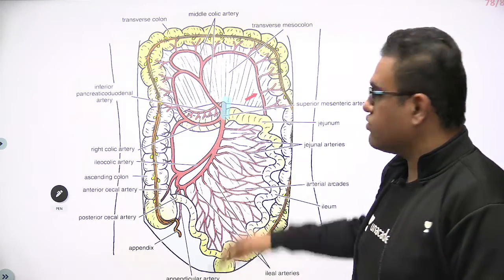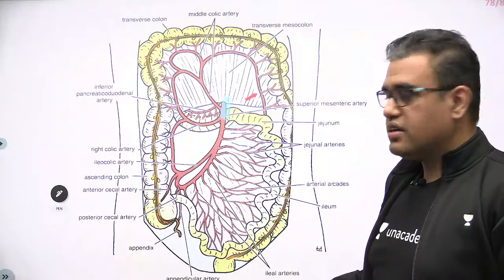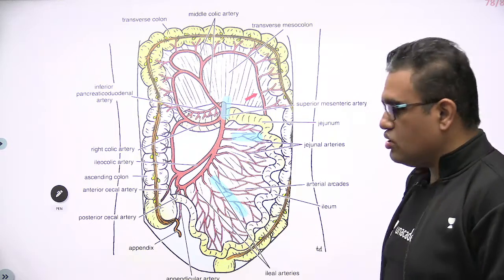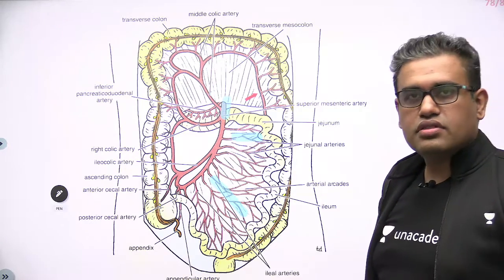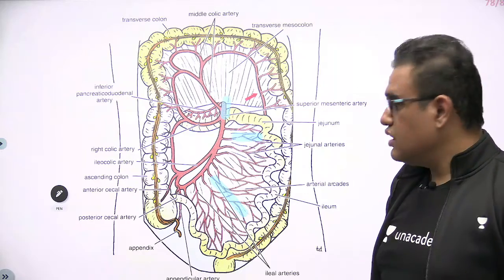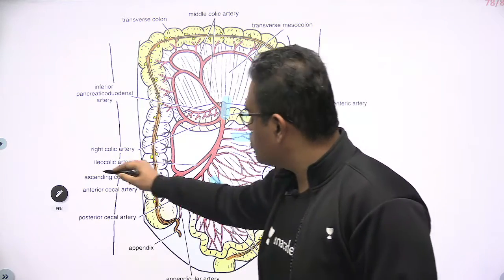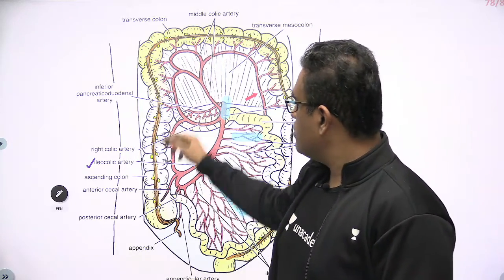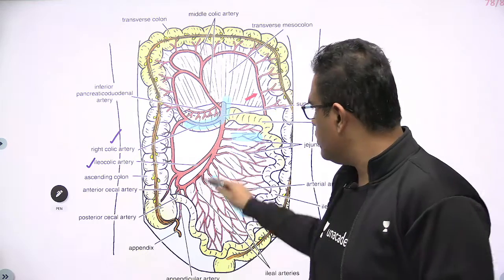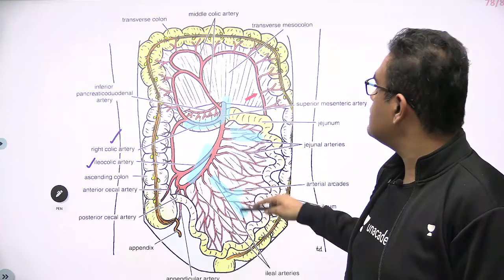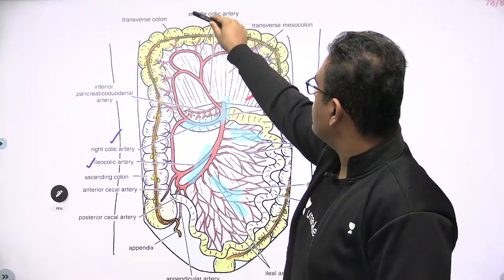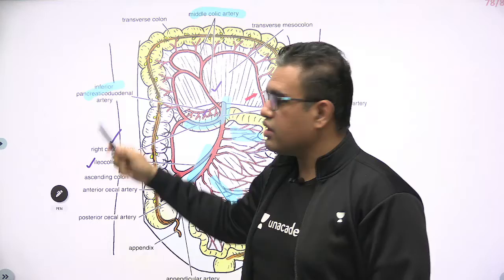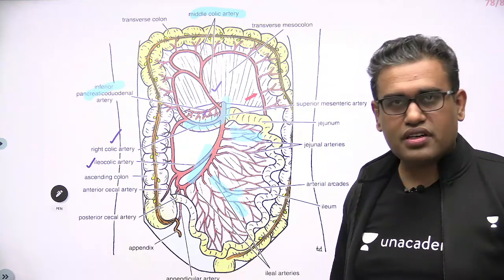This is the superior mesenteric artery arising from here. The jejunum and ileum are lying in the mesentery, so the jejunal and ileal branches will be lying in the mesentery — because the mesentery serves for the passage of vessels, lymphatics, and nerves. On the right side, this is the ileocolic artery supplying the cecum and appendix area. The ascending colon is supplied by the right colic artery. The middle colic artery is supplying the transverse colon. The inferior pancreaticoduodenal is given off initially. These are the branches of the superior mesenteric artery.